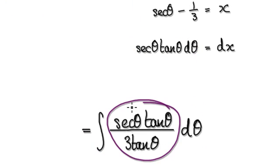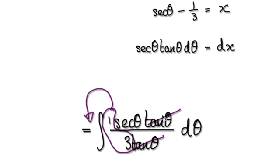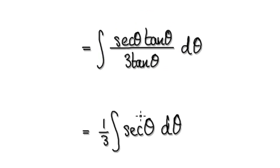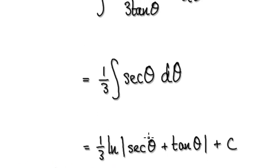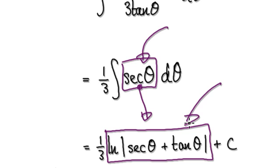So now it's just a matter of integrating this. Tidy this thing up, and then factor out the third here, because it's a constant. So this whole thing here will then become this. Now it's just a matter of integrating this secant of theta. Remember, we've done this many times — if you integrate this, it will then give you this whole thing here. Integrate this, it will give you this thing here.